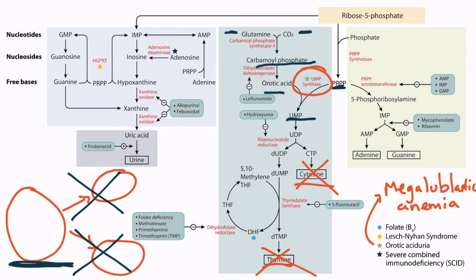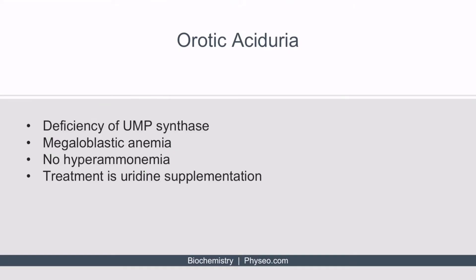It's also important to know that orotic aciduria does not cause hyperammonemia because the urea cycle functions normally. In contrast, ornithine transcarbamylase deficiency, which is a urea cycle disorder, does cause hyperammonemia. Finally, the treatment for orotic aciduria is uridine supplementation — these patients cannot synthesize UMP, so giving them uridine essentially bypasses this step. Orotic aciduria is due to a deficiency of UMP synthase, results in megaloblastic anemia, does not cause hyperammonemia, and the treatment is uridine supplementation.